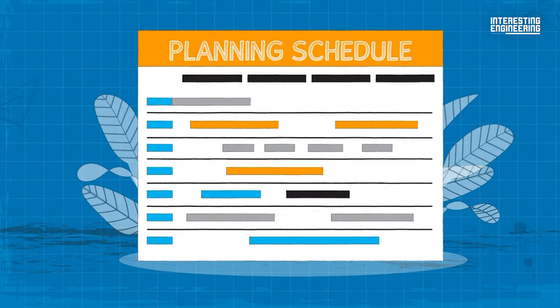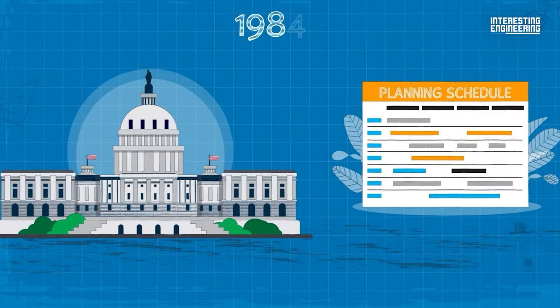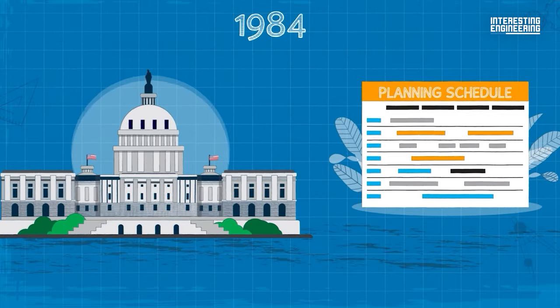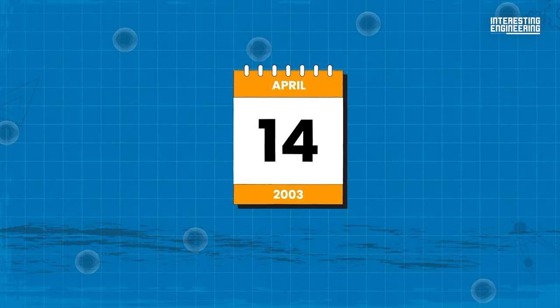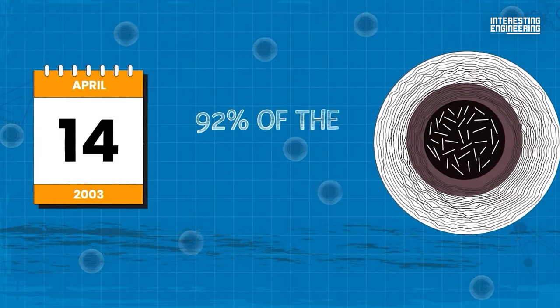Planning for the project started after it was adopted in 1984 by the US government. It was declared complete on April the 14th, 2003, and included about 92% of the genome.